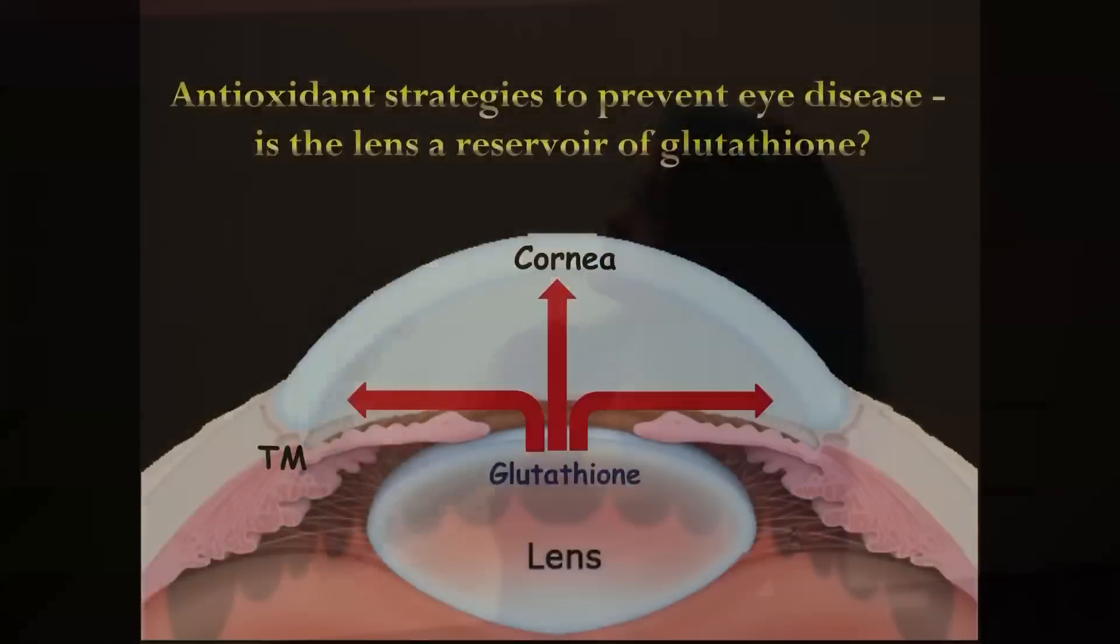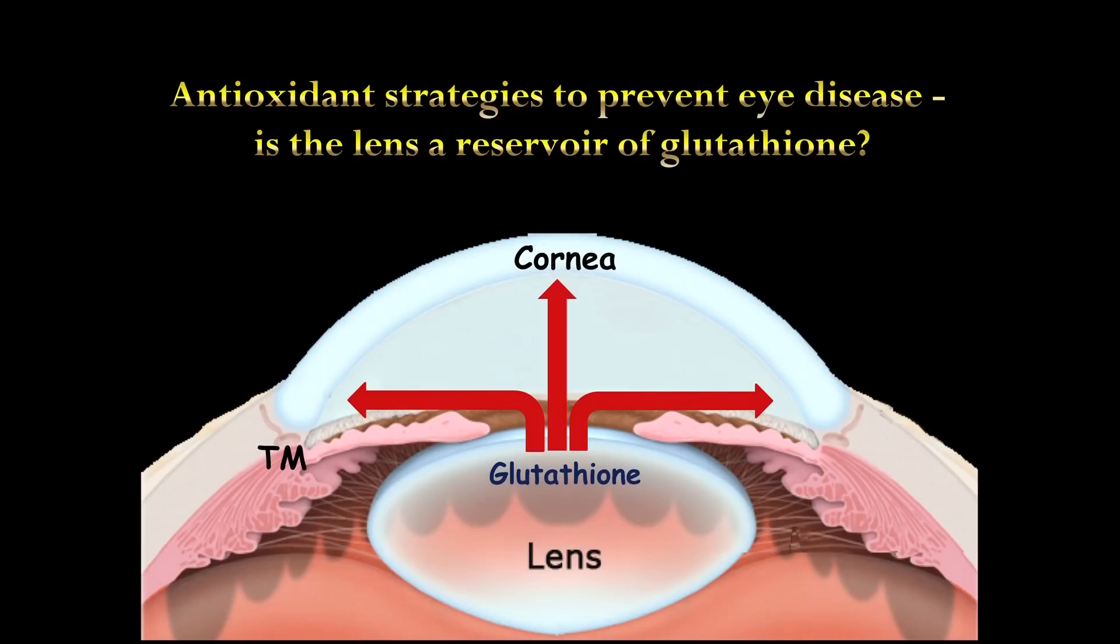This is because our eyes have high levels of antioxidants, such as glutathione. Glutathione protects our cells from damage and keeps them healthy.